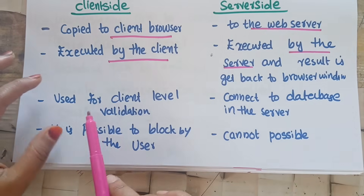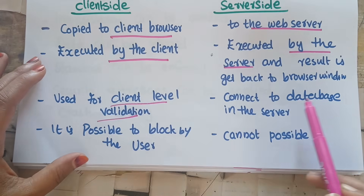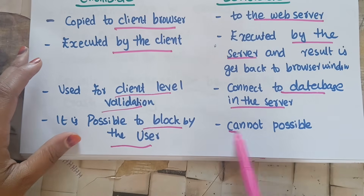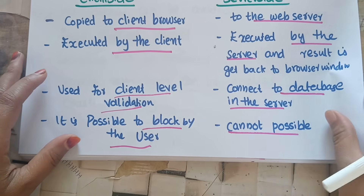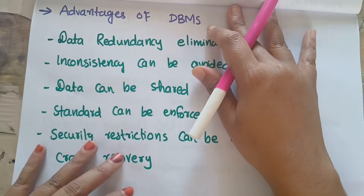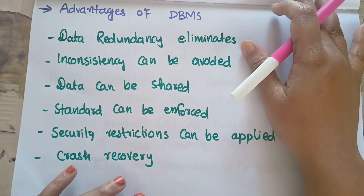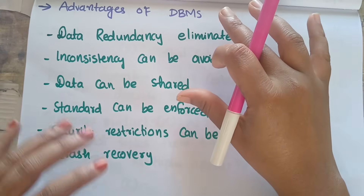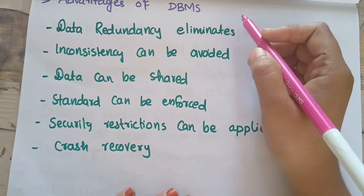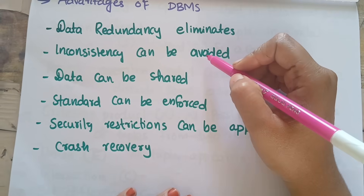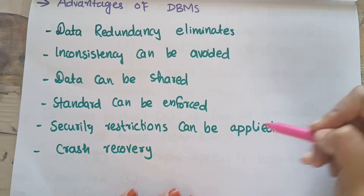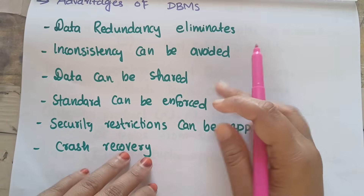If we have client-level validation and a database, we can block certain user actions. Next, the advantages of DBMS — database management system: data redundancy can be eliminated, inconsistency can be avoided, data can be shared, standards can be enforced, security restrictions can be applied, and crash recovery is supported.